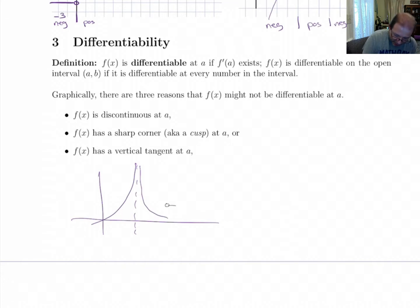It's also not defined if you have a jump in the graph or if you have a missing hole in the graph like this. So if it's not continuous at a, the derivative doesn't exist.